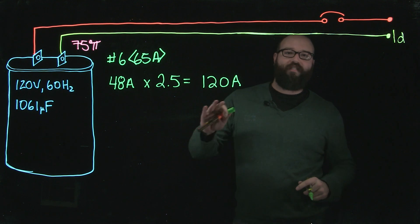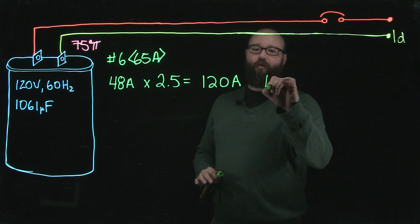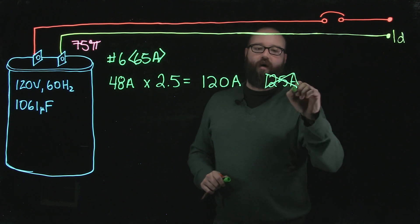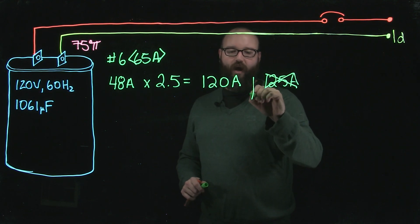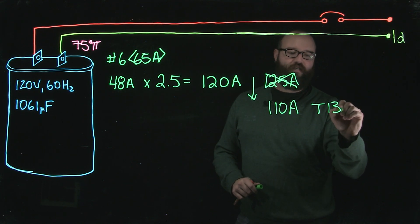Now, when we take this number to table 13, we need to keep in mind it tells us that we cannot exceed 250%. If I was to go with a 125 amp overcurrent, I would be exceeding the 120 amp allowable. So, I go down to a 110 amp overcurrent from table 13.